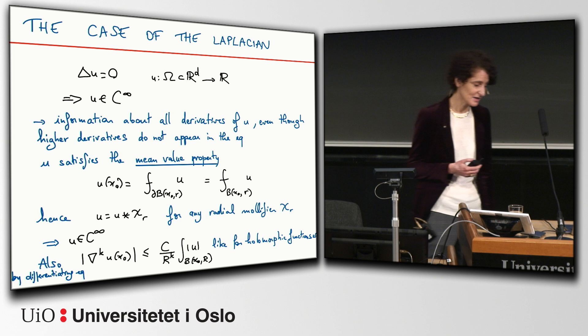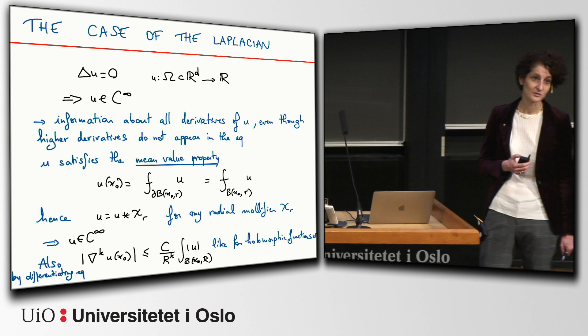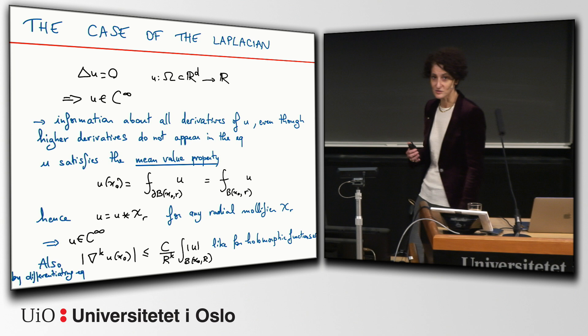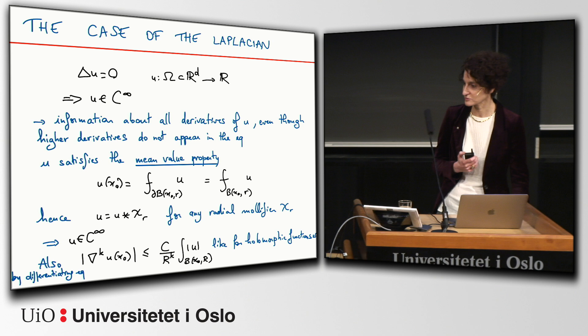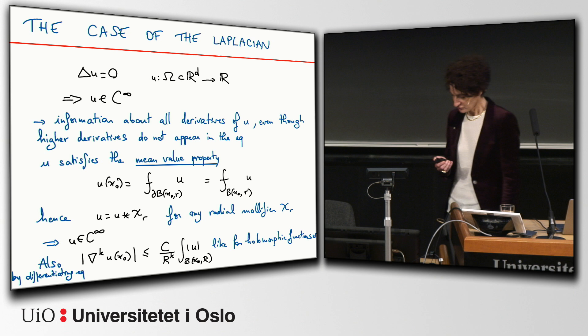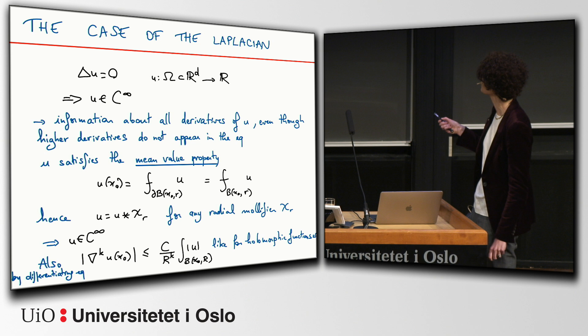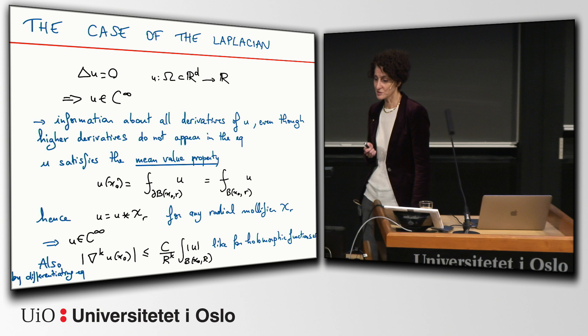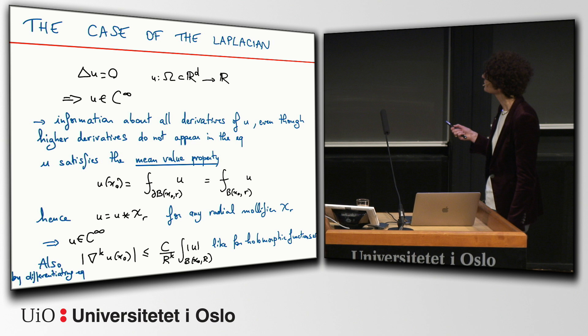So why is that? Luis mentioned and emphasized this: it's because a harmonic function satisfies the mean value property. You can think of the Laplacian as something that quantifies how much a function is different from its averages on small balls. A harmonic function is equal to its average either on the surface of a sphere centered at the point or on the ball centered at the point. One way to rephrase this is that U equals its convolution with any radial and smooth mollifier, and from this you see that U has as much differentiability as the mollifier, so it's C-infinity.